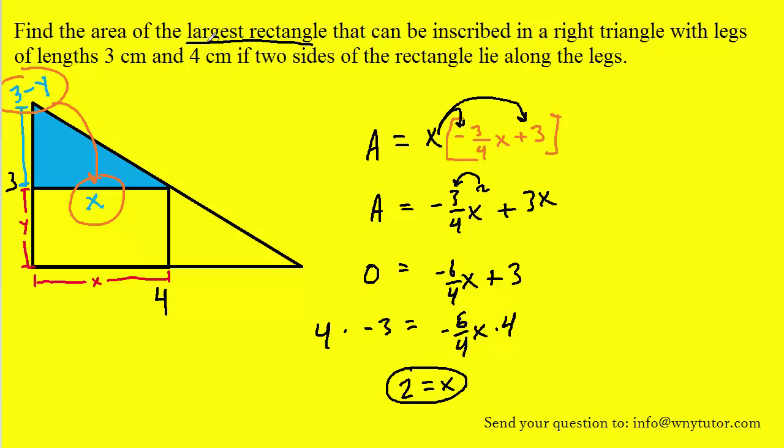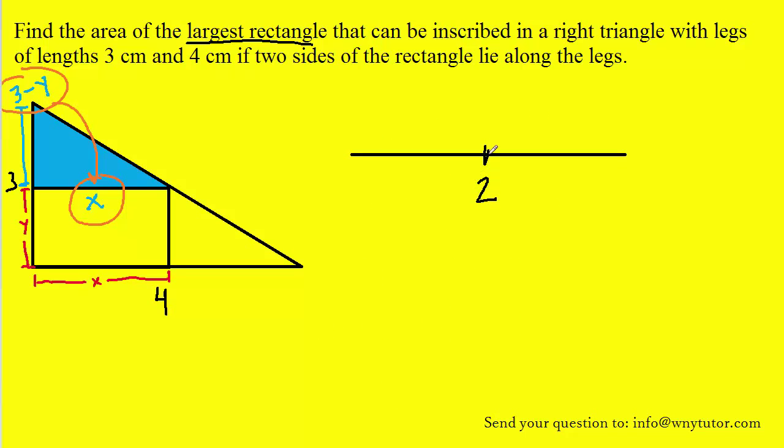Now, technically, in order to ensure that this is the largest rectangle, we'll have to do the first derivative test to make sure that this value of x is indeed producing a maximum value for the area. So let's do the first derivative test. And we can do that by plotting 2 on a number line. What we'll do is choose a value less than 2, such as 1, and a value greater than 2, such as 3, and we'll plug them into the first derivative.